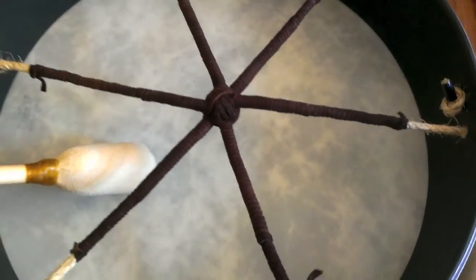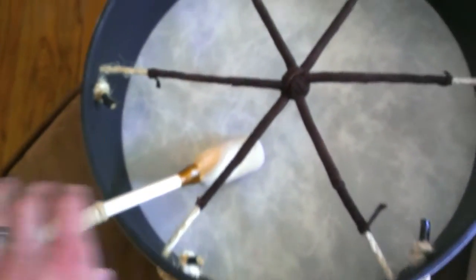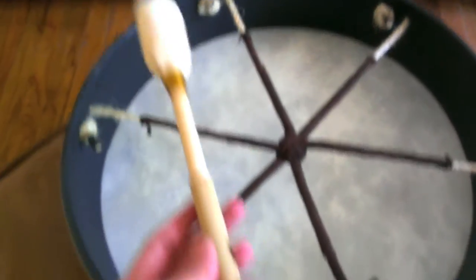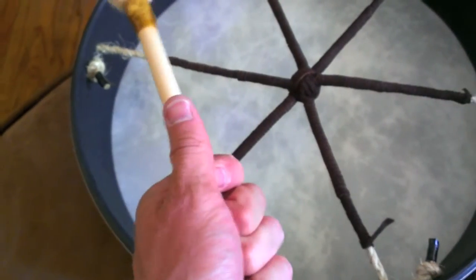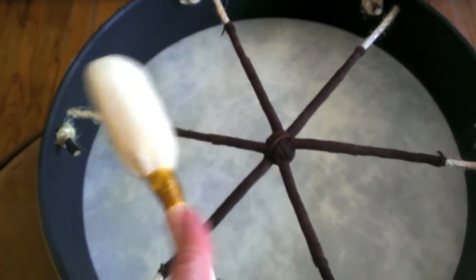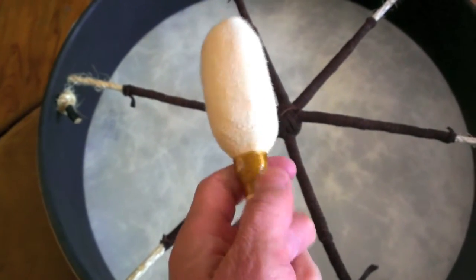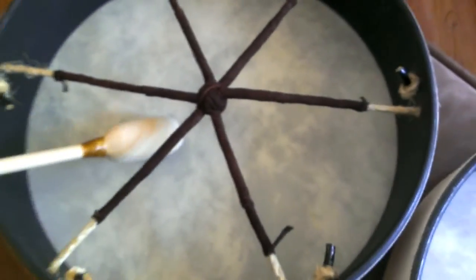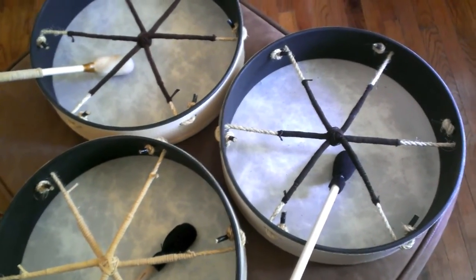These Remo drums come with these drumsticks. I just kind of took the top off and recovered it in some deer skin and use that same material to kind of create a handle for it. And this is just sinew wrapped and then super glued to it to keep it in place. That was helpful, and I don't know if you have any questions.